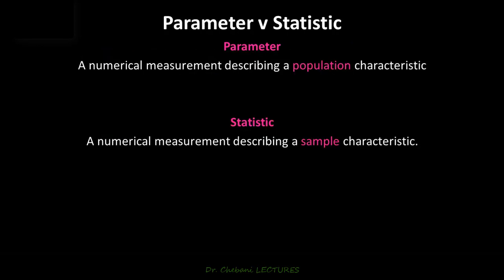Parameter versus statistic. The words parameter and statistic refer respectively to the population and the sample. Whenever you are talking about a numerical measurement describing a population, then you are talking about a parameter. Whenever you are talking about a numerical measurement describing a sample, you are talking about a statistic.